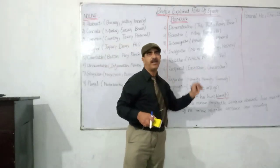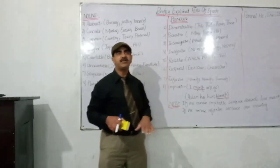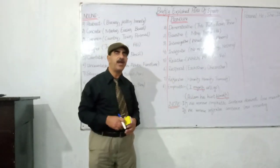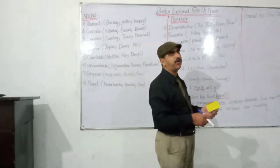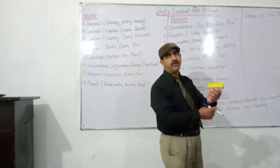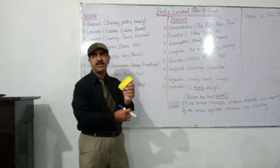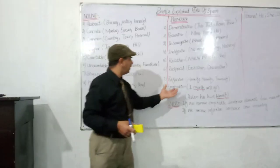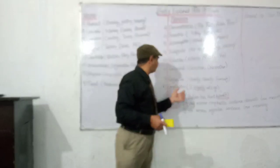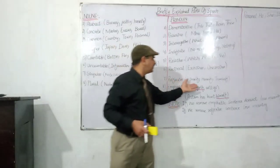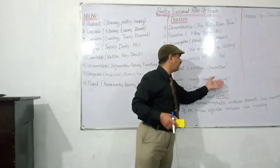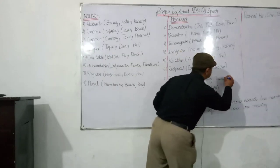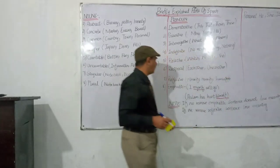Each other is used for two persons, and one another is used for more than two persons. Next are reflexive pronouns: himself, herself, themselves — note it is 'selves,' not 'self,' for the plural form.